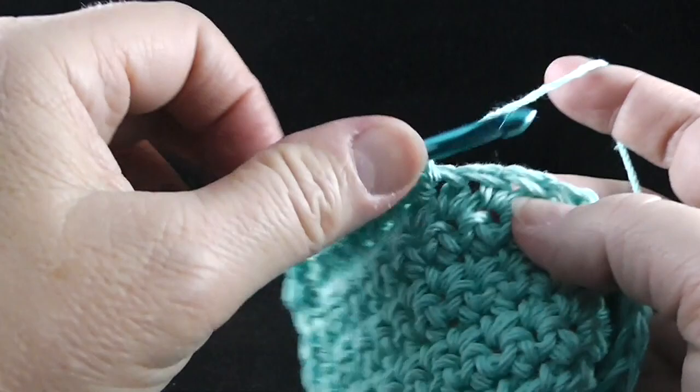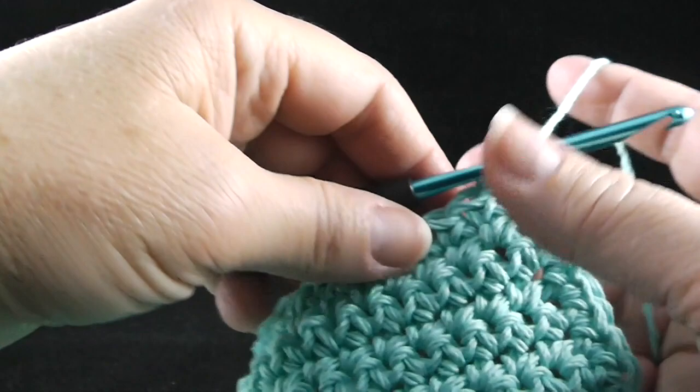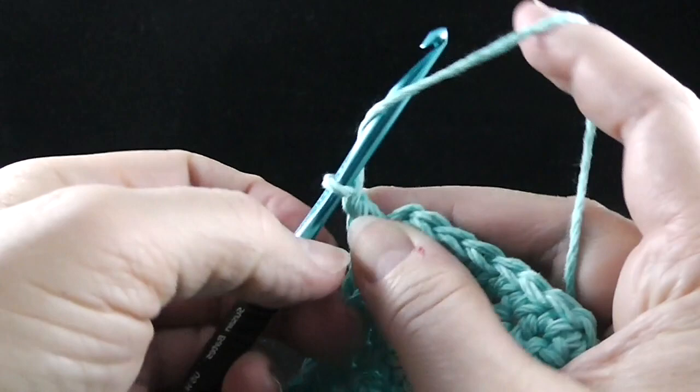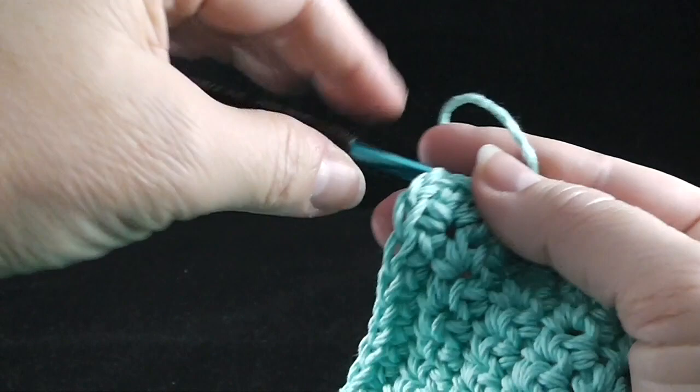OK, I've single crocheted all the way across. Now, there's two ways to end this. One way would be to chain two and then simply join with a slip stitch, right like that, and we would end up with a nice square dishcloth. And that's perfectly fine.